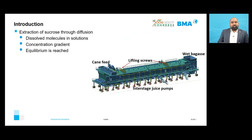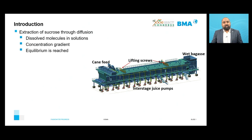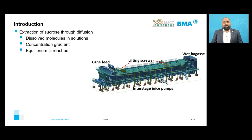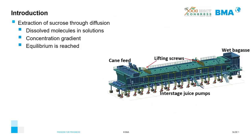Extraction of sucrose through the diffusion process occurs when dissolved molecules in solutions at different concentrations diffuse as a result of the concentration gradient until an equilibrium is reached. The figure on the right shows a typical moving bed cane diffuser where cane is fed from one end and leaves at the opposite end. Two sets of lifting screws are installed at different locations along the length and width of the diffuser, assisting in percolation of juice through the bagasse bed and ensuring that flooding does not occur.